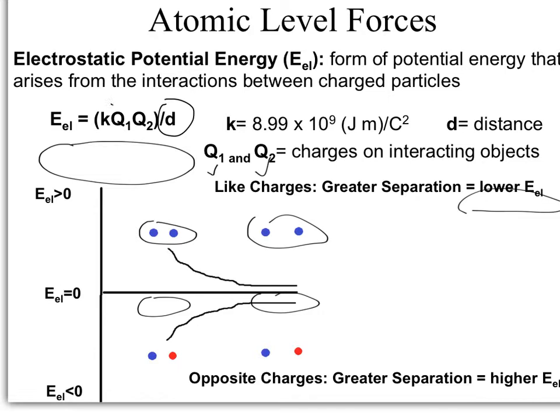When referring to like charges, whether negative-negative or positive-positive, you'll always have a positive value. The larger the distance, the smaller your E sub EL. When dealing with opposite charges, you always get a negative sign and start at a negative potential energy value. The bigger the distance, the less negative you become, getting closer to zero. So greater separation for like charges means lower E sub EL; greater separation for opposite charges means higher potential energy.